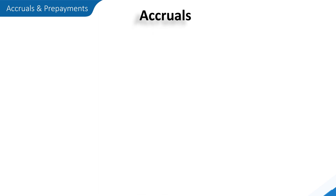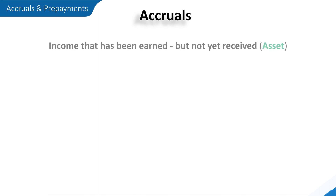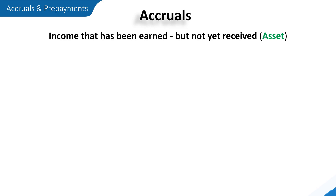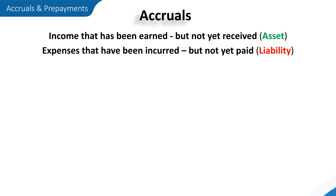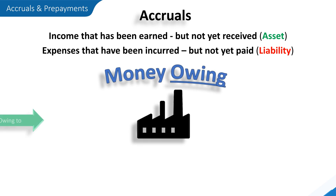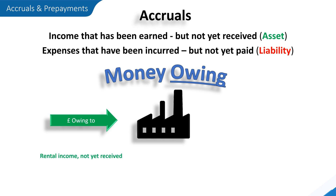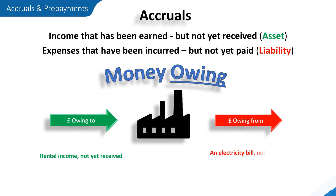As we've just seen, accruals can be one of two things: income that has been earned in an accounting period but has yet to be received at the end of it, which is recognised as an asset; or expenses that have been incurred in an accounting period but have not yet been paid at the end of it, which is recognised as a liability. Either way, it's money owing — whether that's money owing to the business, such as rental income not yet received, or money owing from the business, such as an electricity bill not yet received or paid, or wages not yet paid from the business to its employees.